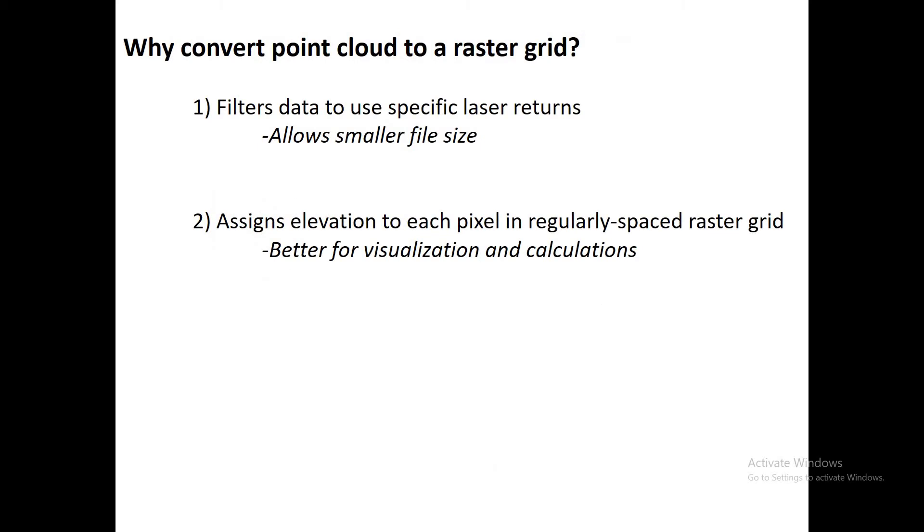So why would we want to convert point cloud data into a raster grid? One reason is that it allows us to filter the data to include only specific laser returns. For example, we only want to get the ground returns, the returns we know are off ground and not off tree branches. This is going to reduce our file size. We're going to throw out half or two-thirds of the data, so we'll have a much smaller file that's easier to work with. It's also going to allow us to assign an elevation to each pixel in a regularly spaced raster grid. We're going to take care of this irregular spacing problem and extrapolate and interpolate our LiDAR shots into a regularly spaced grid that's better for visualization and calculations.